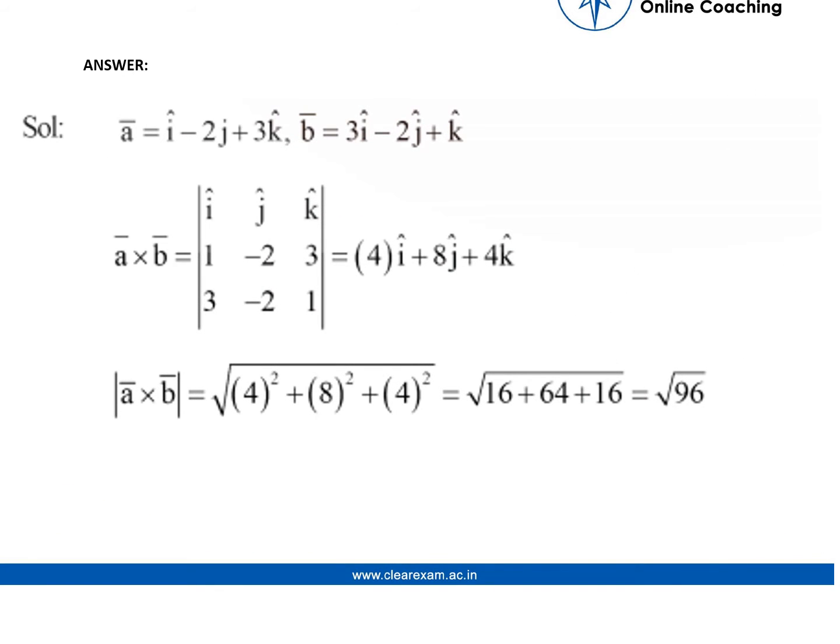So, a vector equals i cap minus 2j cap plus 3k cap, whereas b vector equals 3i cap minus 2j cap plus k cap.